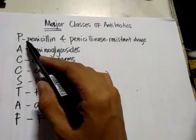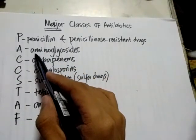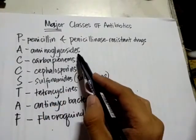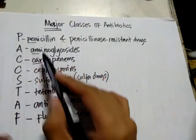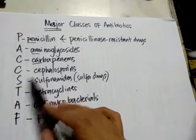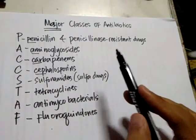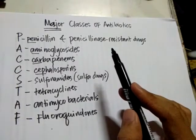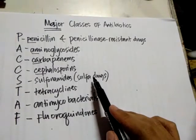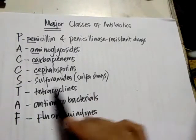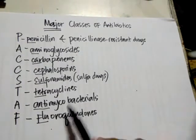To review: P stands for penicillin and penicillinase-resistant drugs, A for aminoglycosides, K for carbapenems, S for cephalosporins — there are many cephalosporins. S is also your sulfonamides, also called sulfa-drugs. T is tetracyclines.